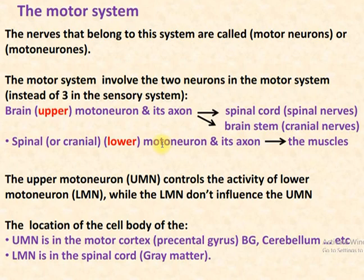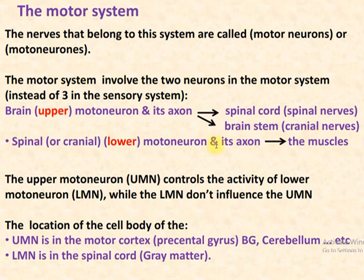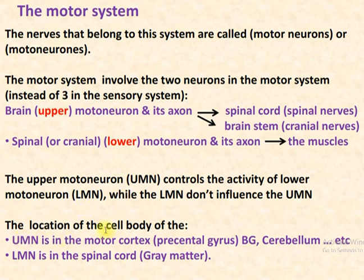The lower motor neuron is located in two places: the first is in the spinal cord and the second is in the brain stem. The lower motor neuron exits the central nervous system into the peripheral nervous system and terminates on a muscle, gland, or any other effector organ. The upper motor neuron originates from the brain and is important in the control of lower motor neuron activity. The cell bodies of the upper motor neuron are in the central nervous system, while those of the lower motor neuron are in the spinal cord gray matter, with some in the brain stem exiting via cranial nerves.